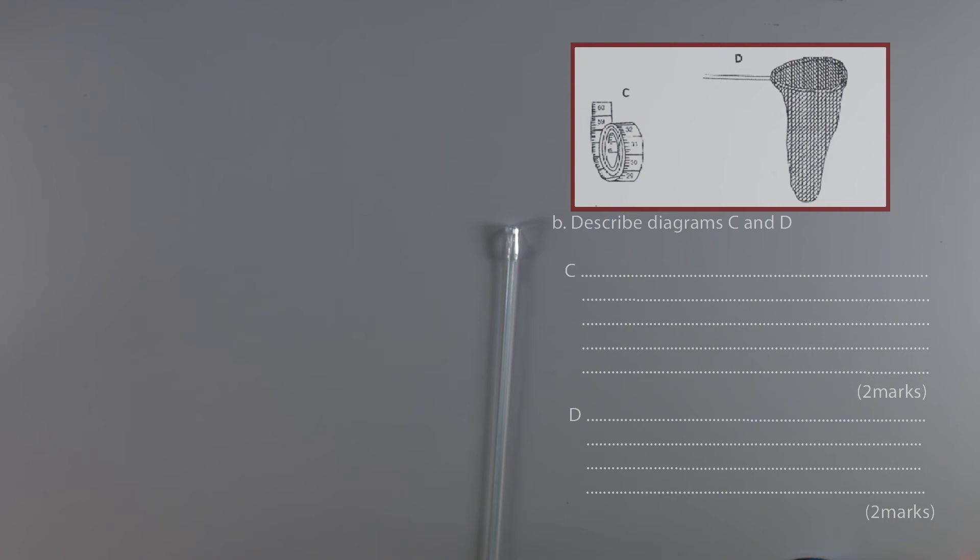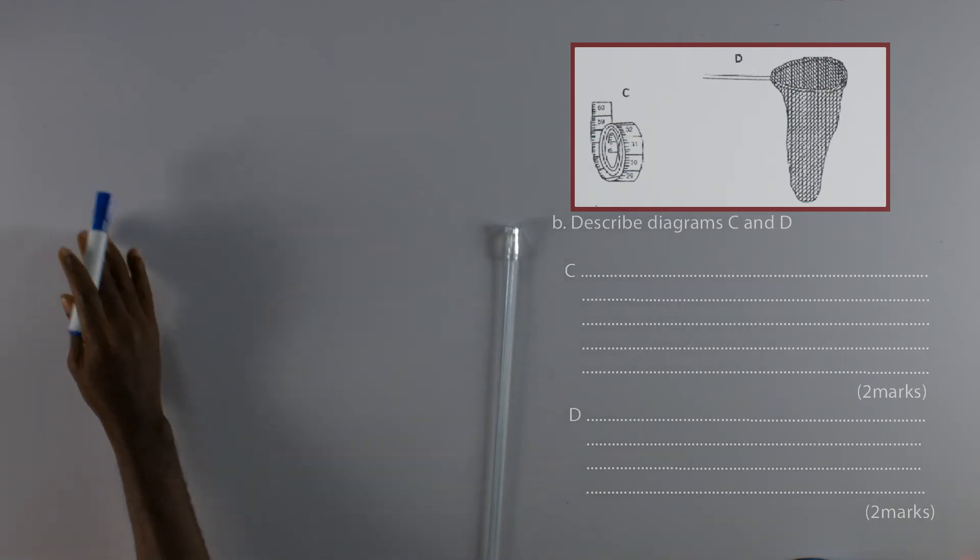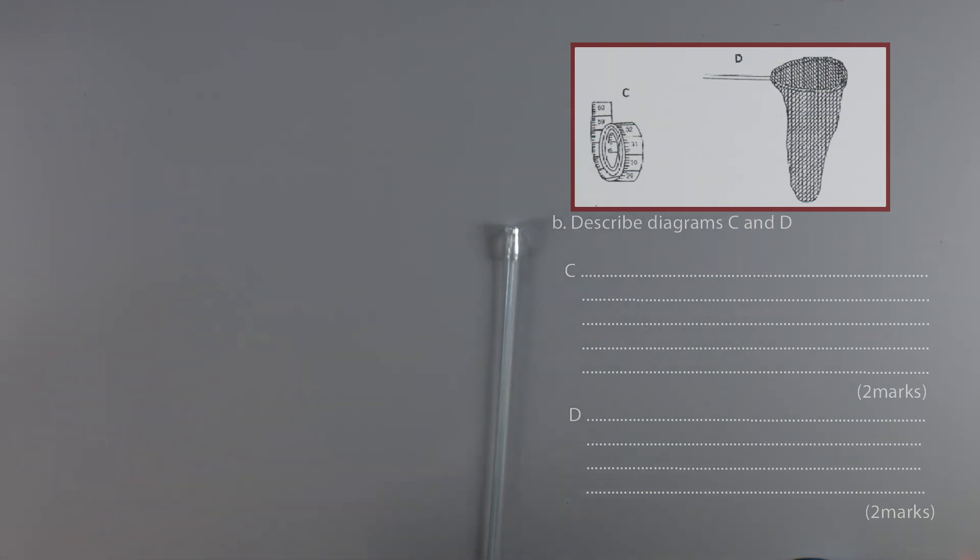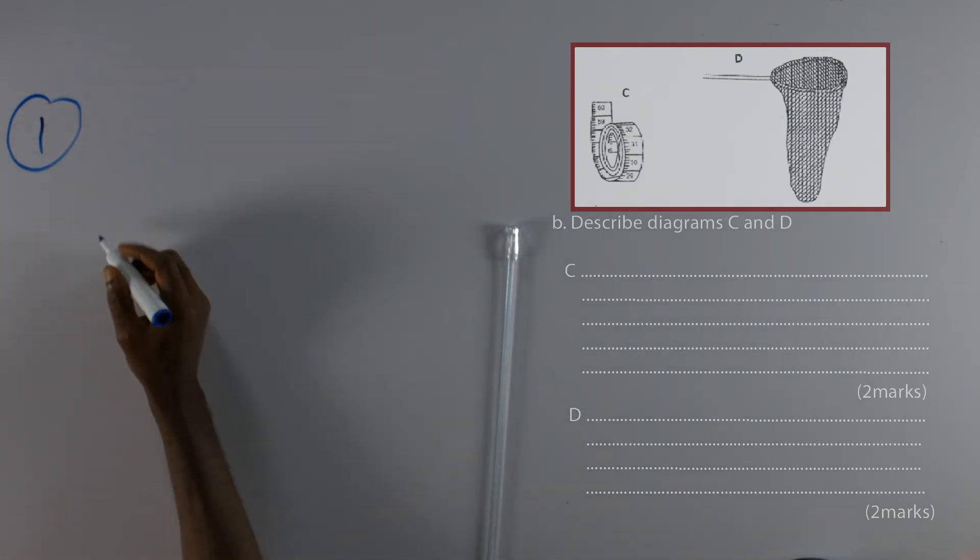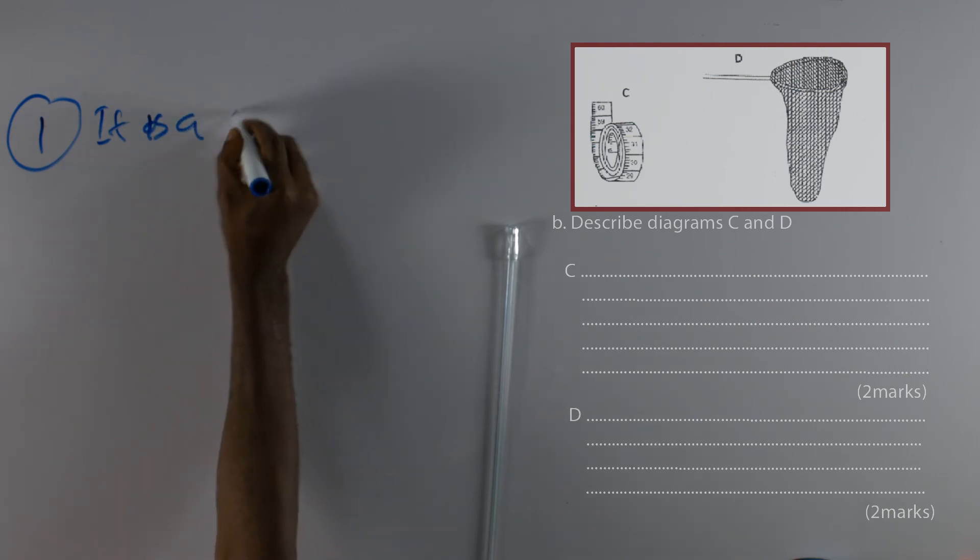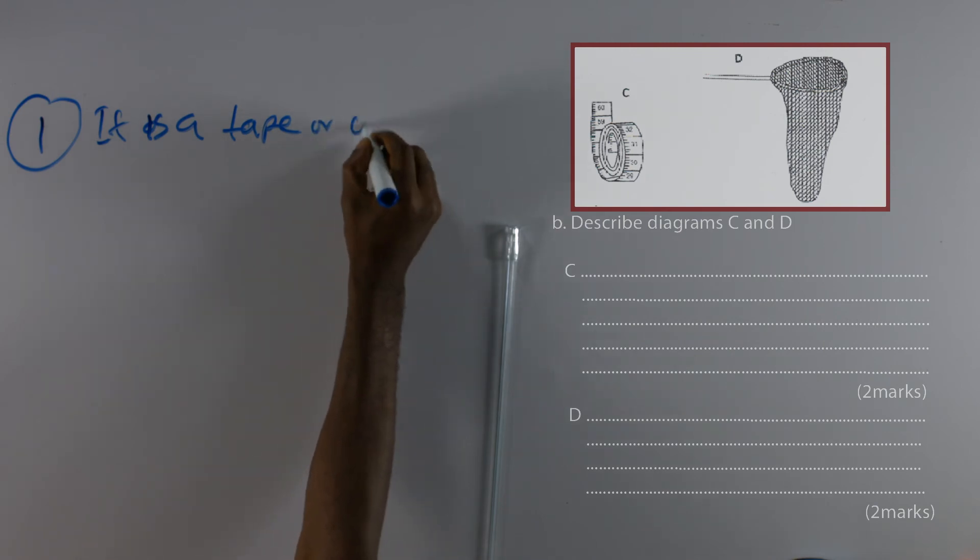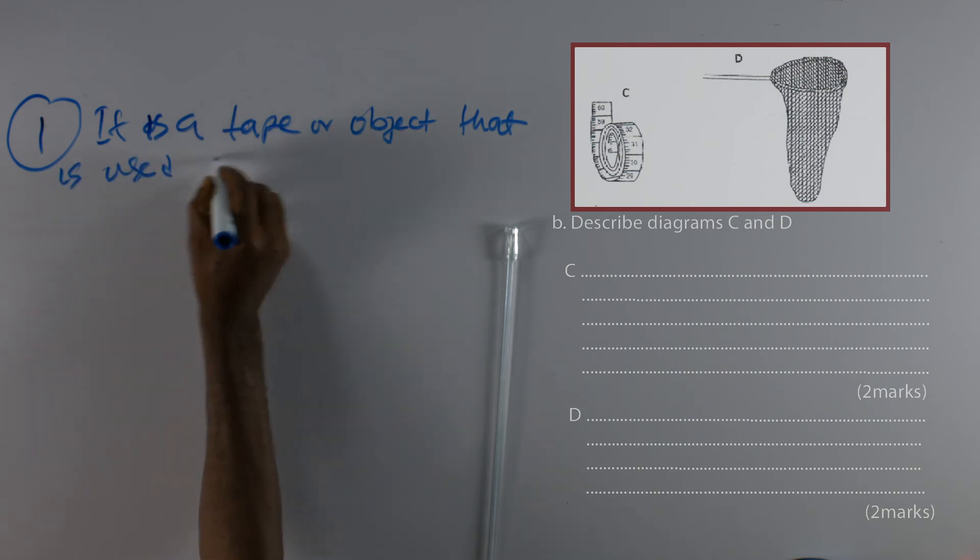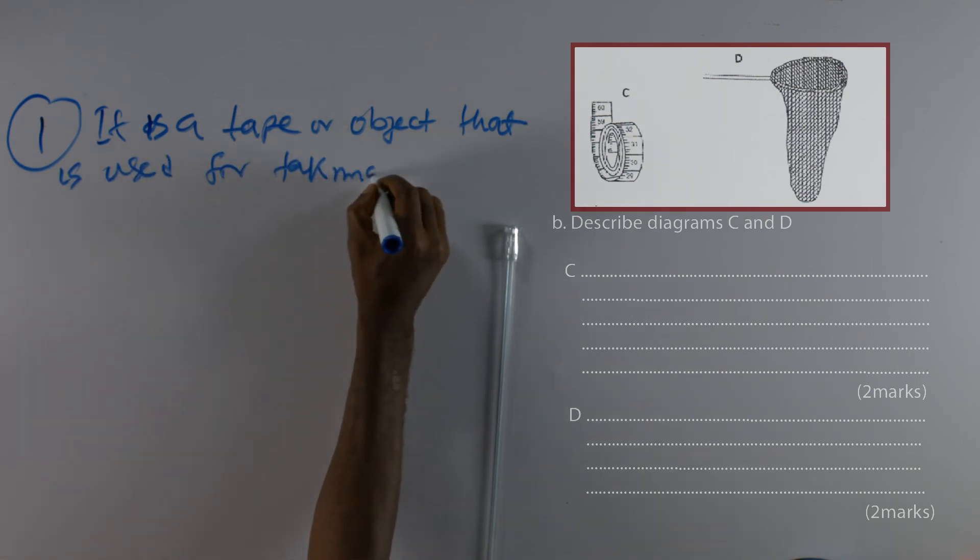If we are faced with a question like this, we are told to give certain basic features of these items, certain basic features of what has been shown in the diagram. And we can see that in answering this, we look at the first one, which is C. And C is measuring tape.